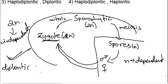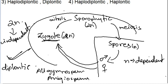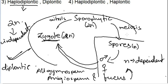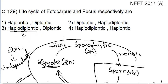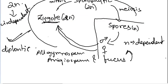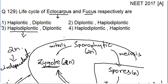All gymnosperms, angiosperms, and Fucus belong to the diplontic life cycle. In the haplodiplontic life cycle, both the diplontic phase and the haplontic phase are independent of each other and the duration of each is almost half. Coming back to the question: Ectocarpus has a haplodiplontic life cycle, and Fucus, as we just discussed, is an example of the diplontic life cycle. So the correct answer is option 3 — haplodiplontic and diplontic respectively.